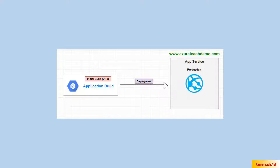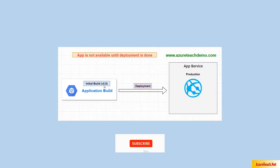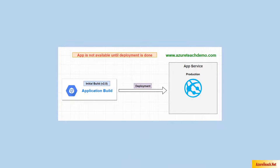In the next release you have added more features to your application and you want to deploy that to production. Here we are deploying V2 of the application to the App Service, and during the deployment the app will not be available. If your app is related to a bank and being used by millions of users, it will be a problem. Also, if there is an issue during the deployment, reverting the application back to the previous version will also take time.